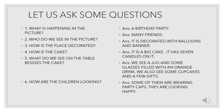We can say it is decorated with balloons and banner. We can see the banner of birthday on the back and lots of balloons can also be seen. Another simple question that comes to mind is how is the cake? Obviously, if it is a birthday party, it is supposed to be a cake party also. The answer is it is a big cake and it has seven candles on it. The next question is what do we see on the table besides the cake? The answer can be we see a jug and some glasses filled with an orange drink. We also see some cupcakes and we can also see a few gifts. The last concluding question can be how are the children looking? We can say that some of them are wearing party caps and all of them are looking happy and they seem to be enjoying themselves.